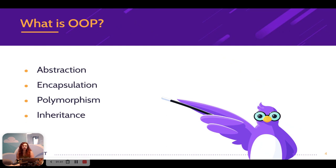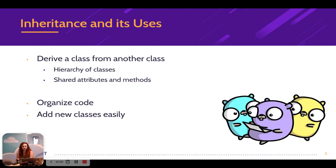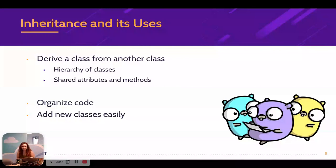Encapsulation is differentiating between things that should be publicly accessible to all, or private, or accessible to only certain objects in your code. Polymorphism is using different types through the same interface. And inheritance — since we're going to talk a bit more about it — is deriving a class from another class. This creates a hierarchy of classes where child classes share attributes and methods with their parent classes. This helps organize code, reduce duplicate code, add new classes easily, and extend existing libraries.